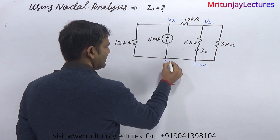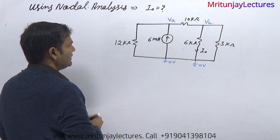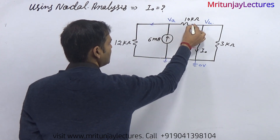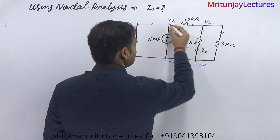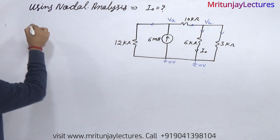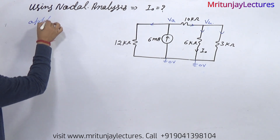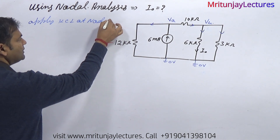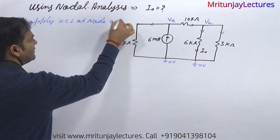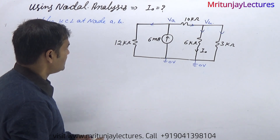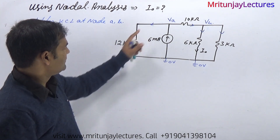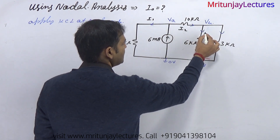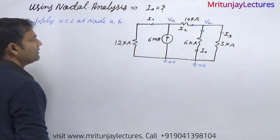Now apply KCL at node A and node B. Consider that current through the first branch is i1, the second branch is i2, and the third branch is i3.